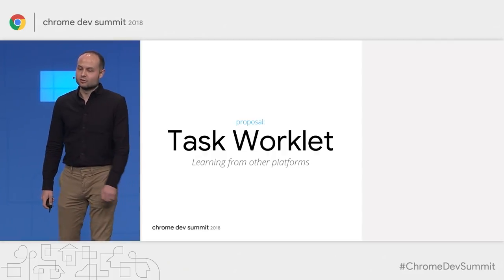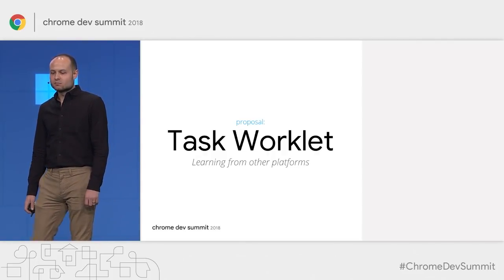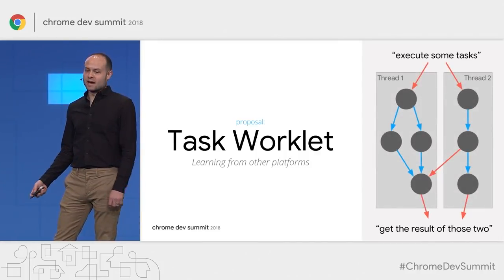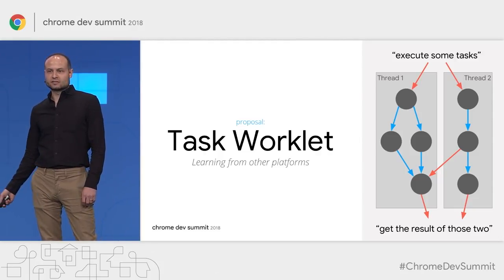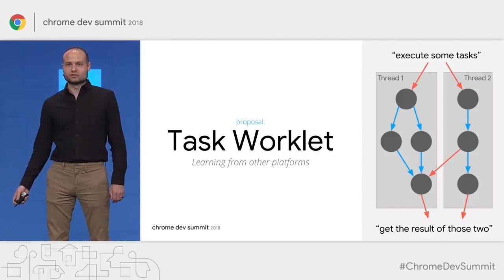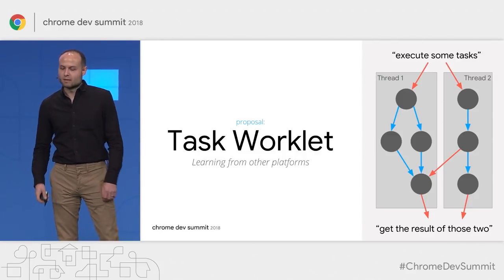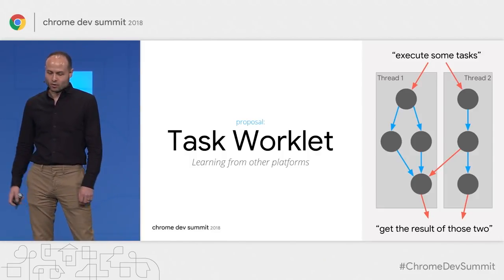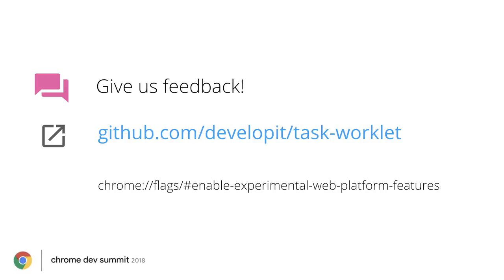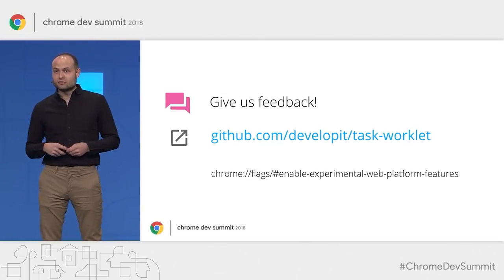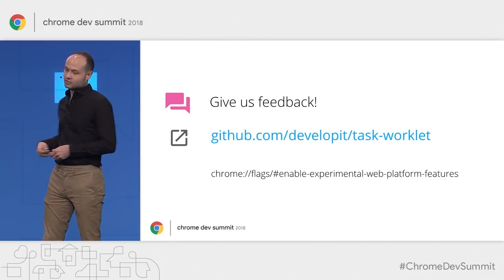This brings us to a new proposal that incorporates some of our learnings from other platforms. It lets developers avoid sending data back to the main thread, lets you chain tasks together without data transfer and pay the return cost only once, and it minimizes thread hops using a built-in sticky thread pool. This is a really early proposal. There is an implementation available in Chromium behind the experimental web platform features flag, and we also have a polyfill, source code, and demos available at our GitHub repo.